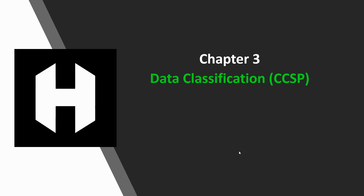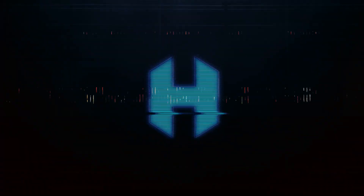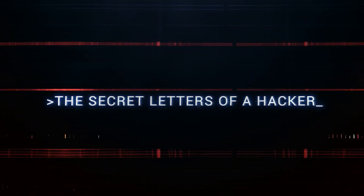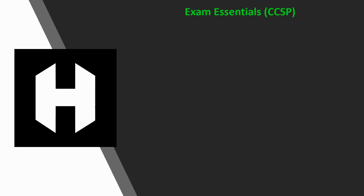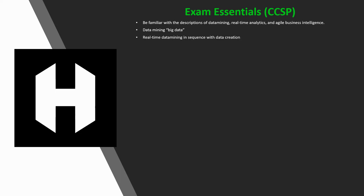Alright guys, let's go over chapter 3 exam essentials. Be familiar with the description of data mining, real-time analytics, and agile business intelligence. Know that data mining is also called big data, real-time data mining is data mining in sequence with data creation, and agile is the state-of-the-art data mining that can detect trends inside of trends and identify even more indirect and obscure patterns.